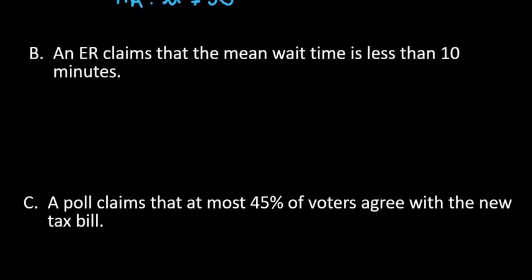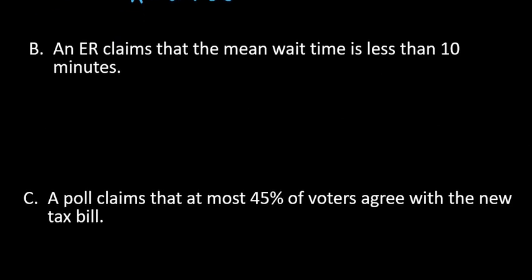Alright, so our next one is that an ER claims that the mean wait time is less than 10 minutes. So again, since we're using mean, anytime it says mean or average we're going to use μ. Is less than always points to the left. So if you get confused by this, less than always points to the left because the values are always smaller to the left of that number. So the mean is less than 10.